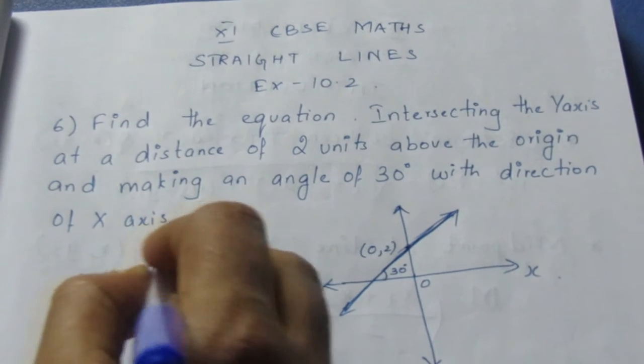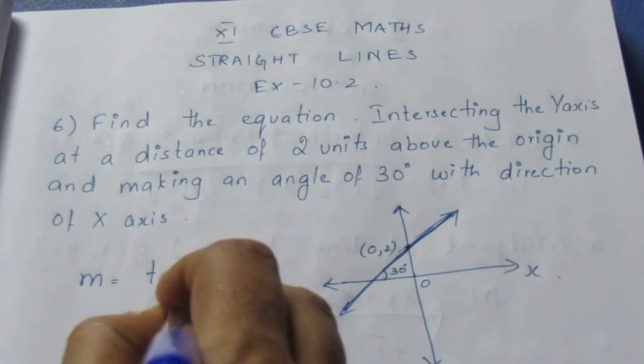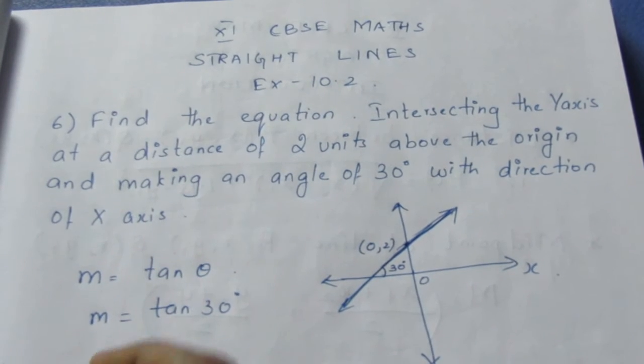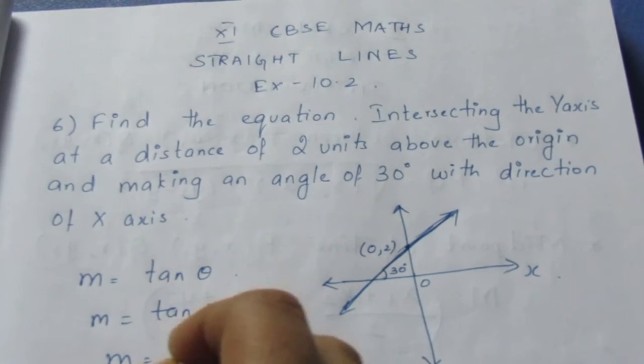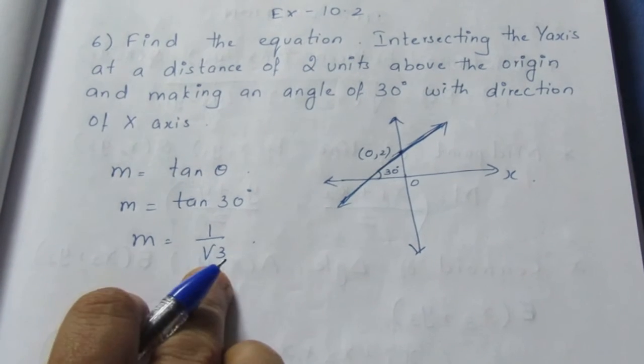We can find m = tan θ. We can find the slope by applying tan 30°. So m = tan 30° = 1/√3. Now, the slope is equal to 1/√3. We have found the slope.